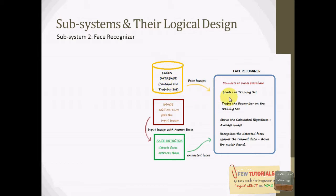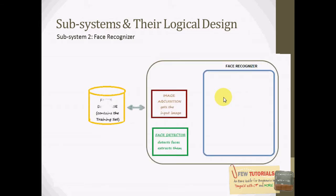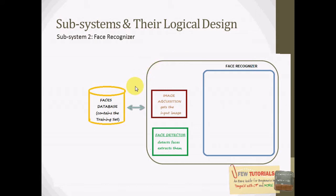We can represent this in the form of a diagram. This representation is the alternative of the one we just saw earlier, but this is now a proper logical design for our second subsystem. This diagram is now depicting, logically, the layout of our face recognition subsystem.